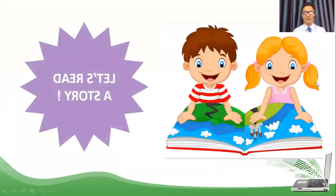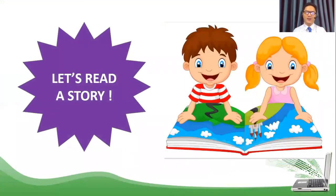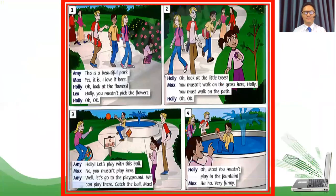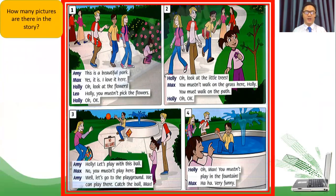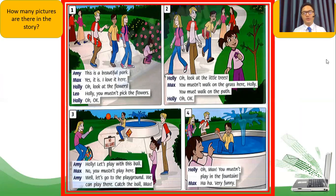And here, let's move on to the story. We are going to read the story together. Let's see. So students, this is the story for you. Now, can you look at the story for me? And how many pictures are there in the story, students? Of course, easy, right? We have four pictures. So there are four pictures in the story.